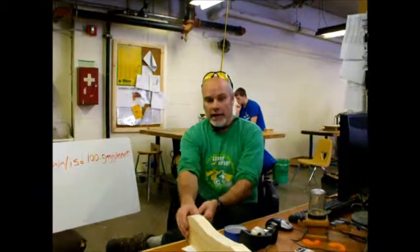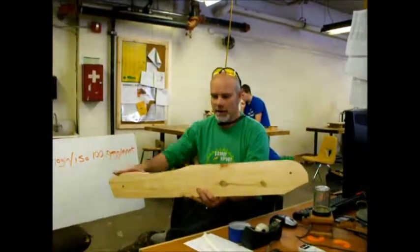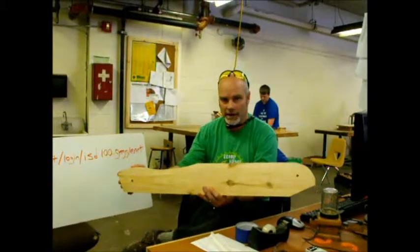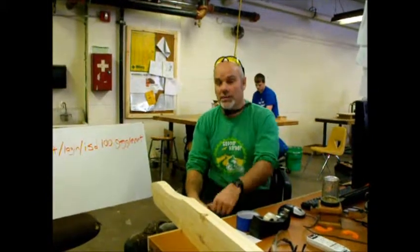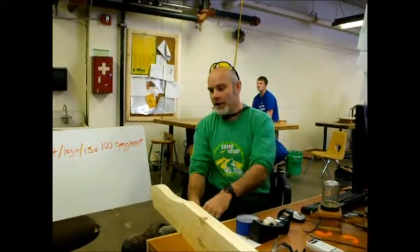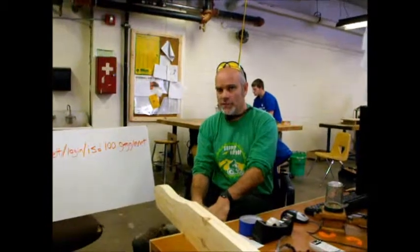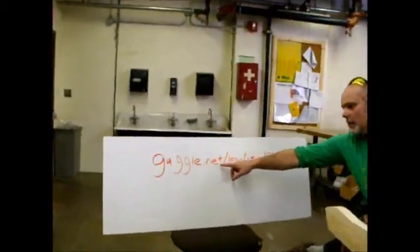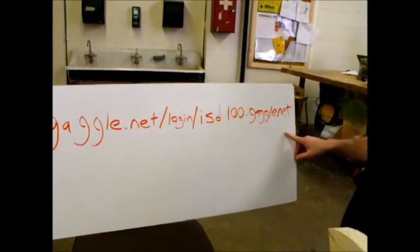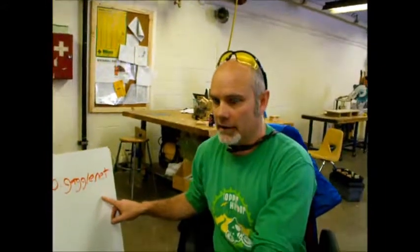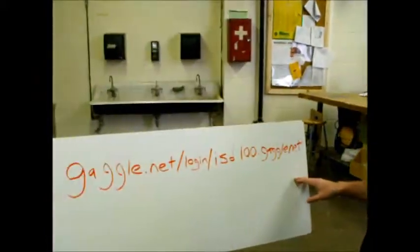So today, what we've got to do: number one, we need to cut our angles on our back legs. Also, if you get a chance, maybe get in line and cut the arc on the band saw, and also cut this back arc. You also need to be updating your notes. Don't forget about the assignment I sent you on Gaggle. This is the Gaggle login: gaggle.net slash login slash isd100.gaggle.net. If you do not log in at that address, your username and password will not work. Yesterday we had some problems with that, but today we won't because you're going to use the right username and password.